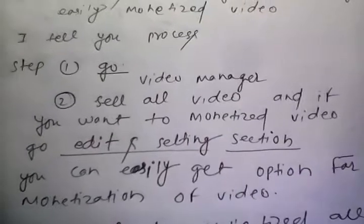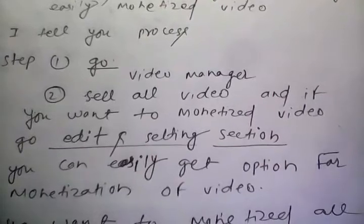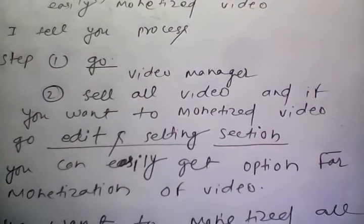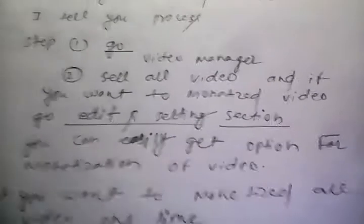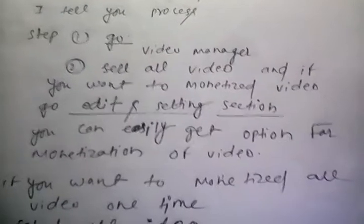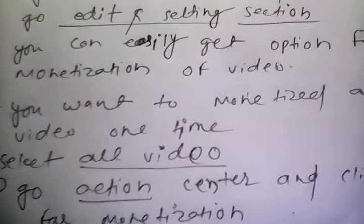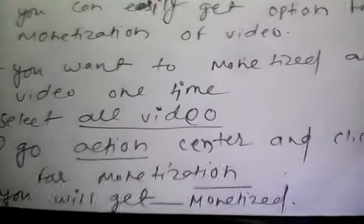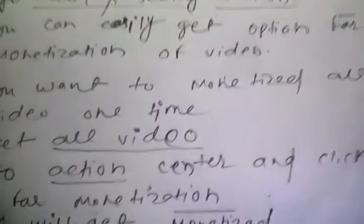Click on Edit and you will easily get the option for monetization. Click on Monetization, select the type of monetization you want, then click OK and Save. If you want to monetize all videos at once, select all videos, go to the Action Center, and click Monetize — you will monetize all videos in one click.